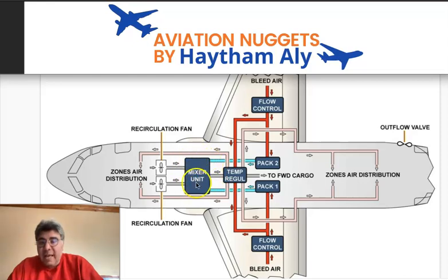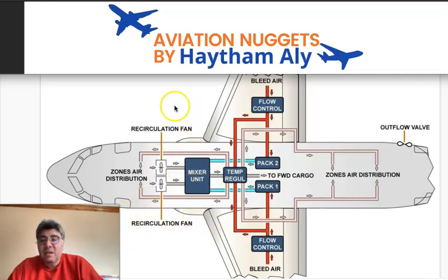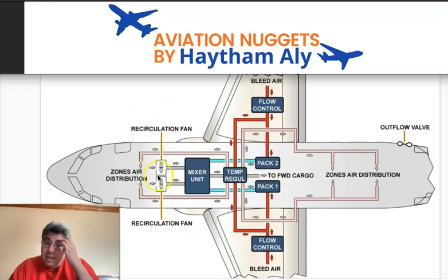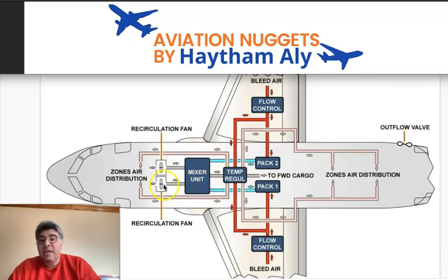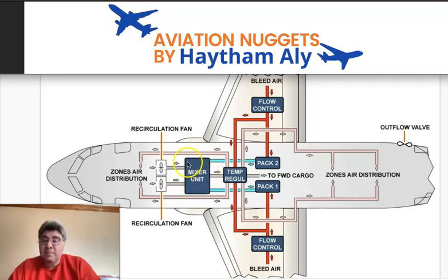What is the function of the mixer unit? The mixer unit is used for fuel saving and cost saving. Thanks to the mixer unit, we can mix some air from the cabin using the two recirculation fans, which collect air from the cockpit and cabin. The mixer unit mixes this recirculated air with fresh air coming from the packs, so the air conditioning system does not depend solely on the packs.